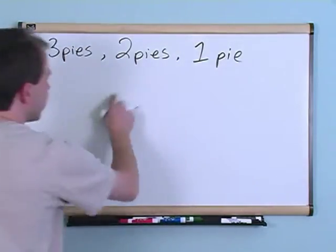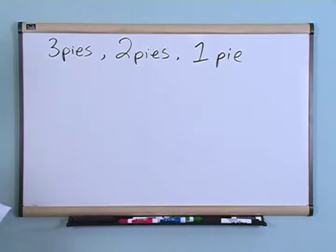So three pies, two pies, one pie - we're going to start cutting the pies up and then we're going to have less than one pie and we're going to have a fraction.